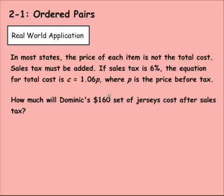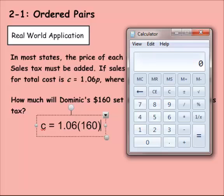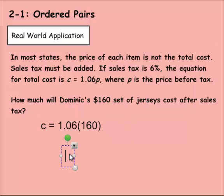So we would input this for P, right? This is the price before tax. So we're going to multiply that times 1.06. Cost equals 1.06 times 160. And then we could use a calculator to solve that. 160 times 1.06. That gives us 169.6. And then I'm going to do 60 because it's money and you never have 0.6 cents. You have 60 cents.